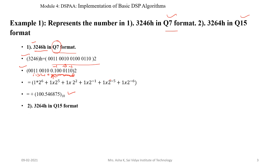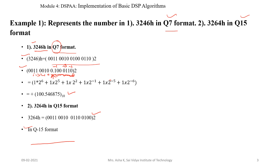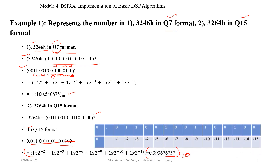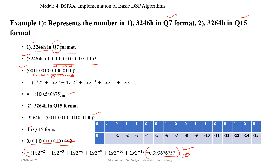Similarly, the next number is 3264 hexadecimal in Q15 format. Convert that into binary representation, then place a decimal point after 15 binary bits. Convert that into decimal representation, and after converting we get 0.393676754 in decimal number format. This is the solution to represent 3246 in Q7 format and 3264 hexadecimal in Q15 format.